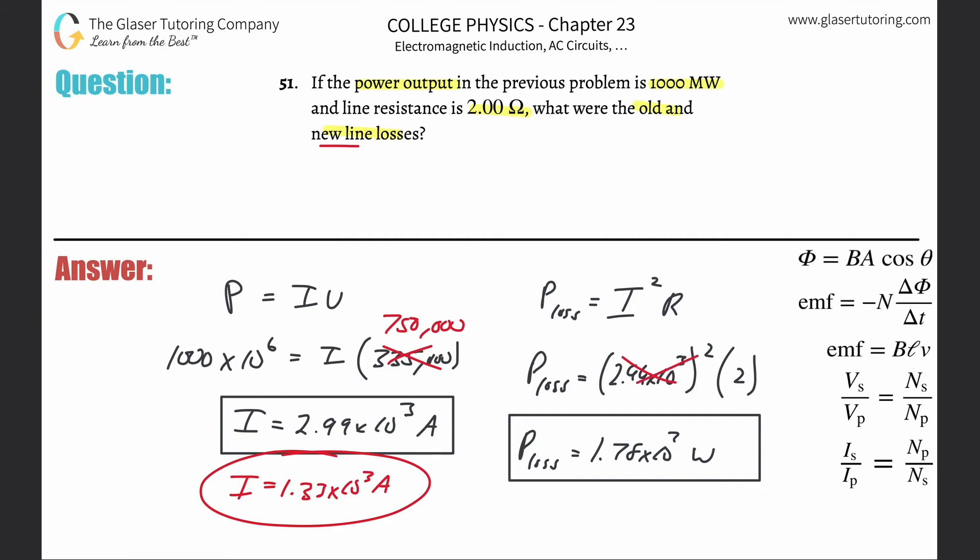Now we're going to take that new amp and plug it into here, 1.33 times 10 to the third amps, it's still two ohms the line, so we're going to square it and then we're going to multiply it by two. And then we realize that the power loss p loss will be equal to 3.56 times 10 to the 6.